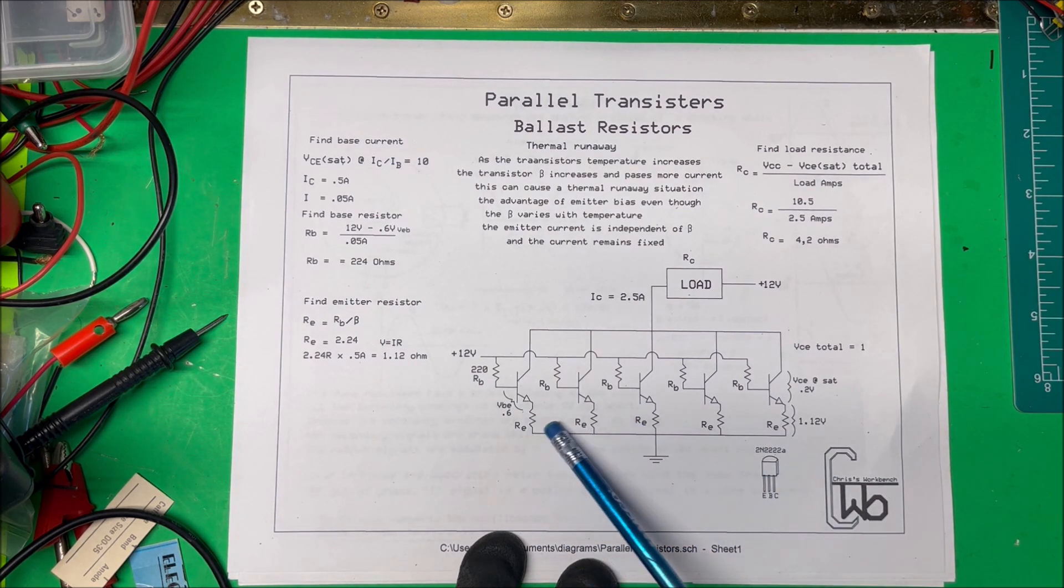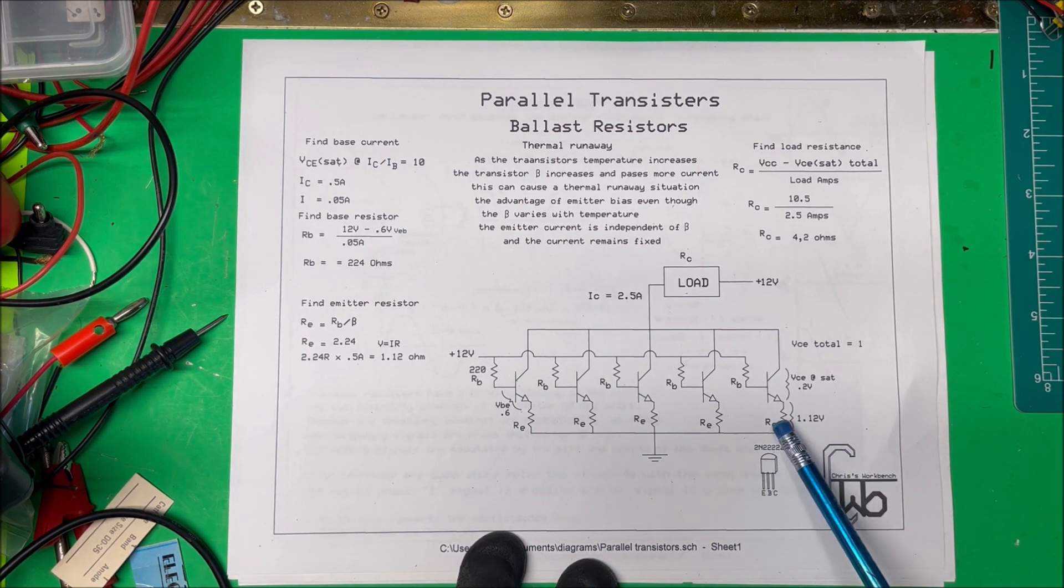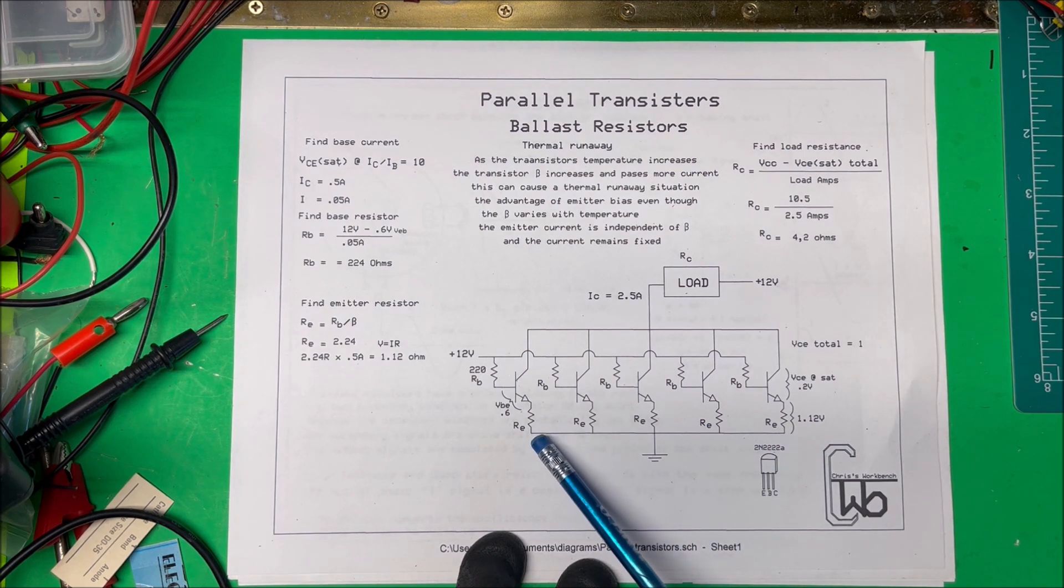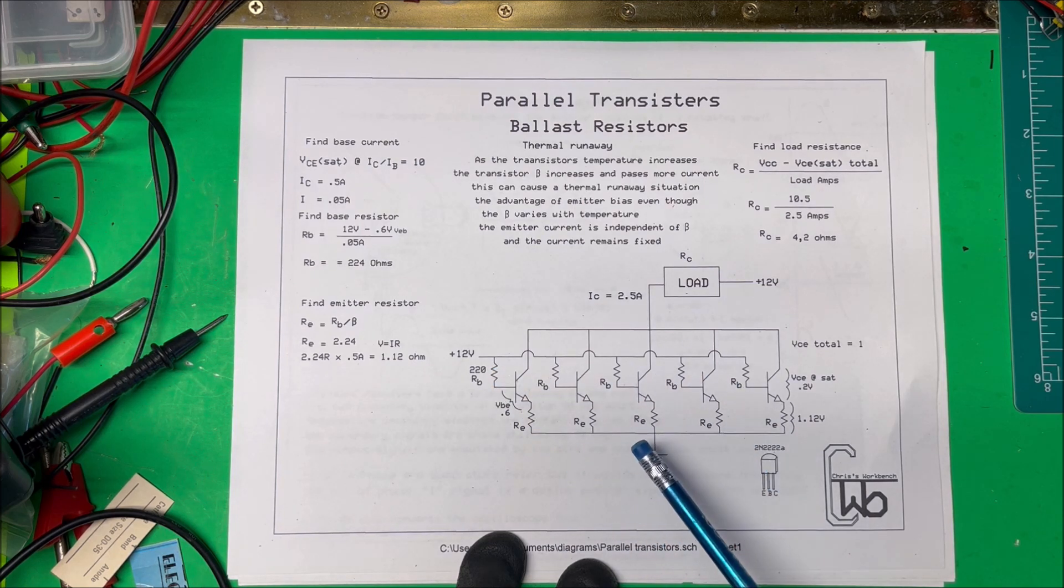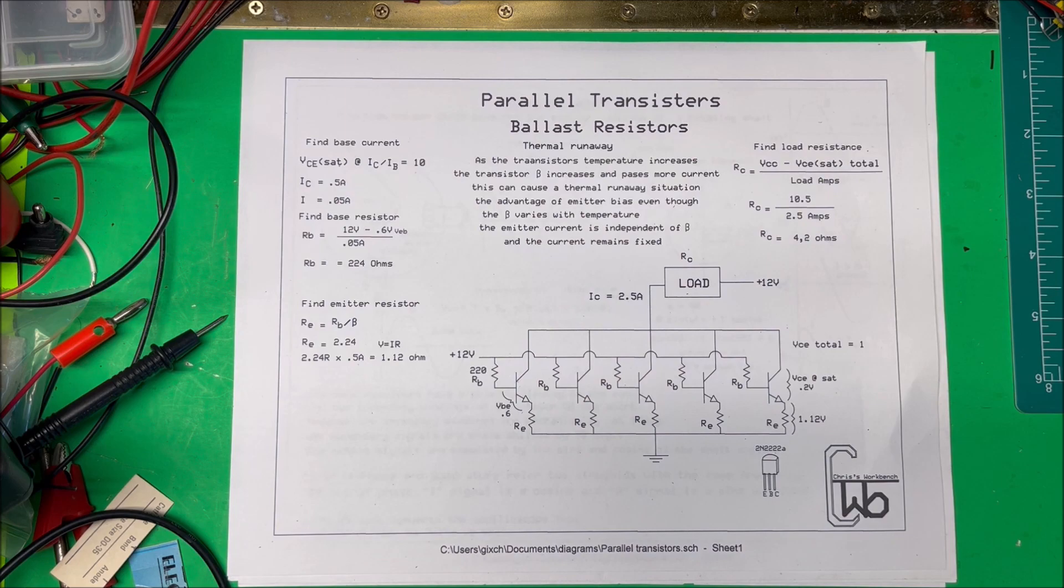And typically you want to have about a 1 volt across each of these. So these are all 1 ohm resistors here and 220 ohm resistors up here and we're gonna see if it works.